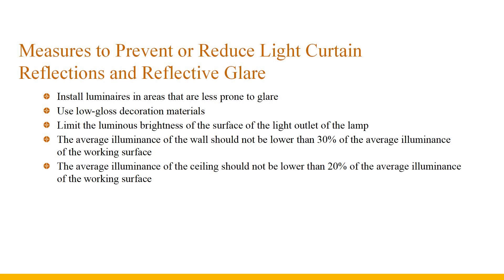Measures to prevent or reduce light curtain reflection and reflective glare include: first, install lamps in positions that are not prone to glare; second, use low-gloss surface decoration materials; third, limit the luminous brightness of the lamp outlet surface. Additionally, the average illuminance of the wall should not be lower than 30% of the average luminance of the working surface, and the average luminance of the ceiling should not be lower than 20% of the average luminance of the working surface.